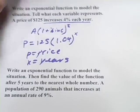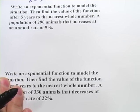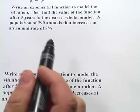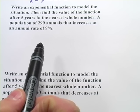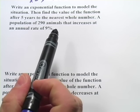A lot of these are going to be very similar. Let's look at the next one. It says, write an exponential function to model the situation, then find the value of the function after 5 years to the nearest whole number. A population of 290 animals